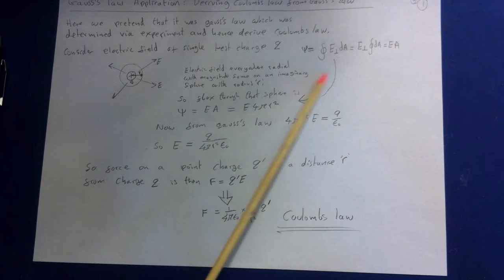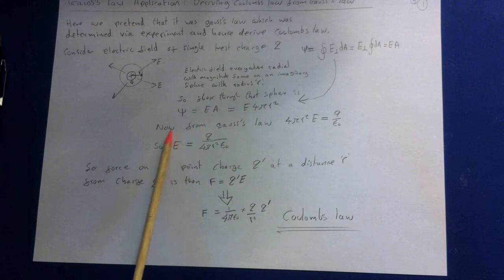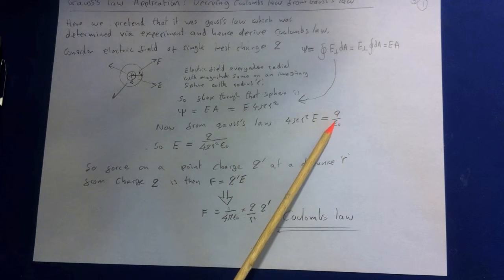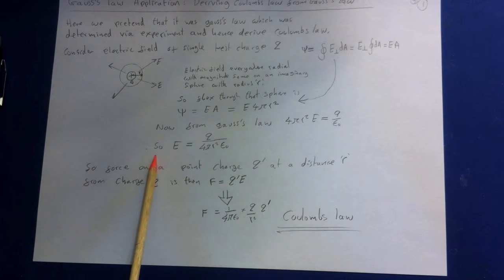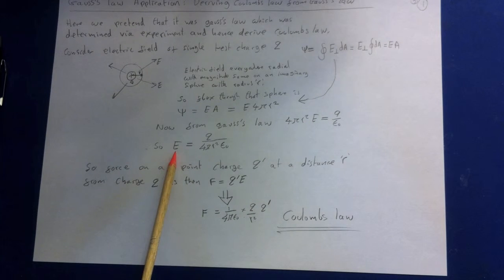Okay, so we know that the area of the surface is 4πr². Therefore, from Gauss's law, we know that the electric field times the area is q over ε₀. So if we rearrange this equation, we'll end up with the field E equals q over 4πr²ε₀.